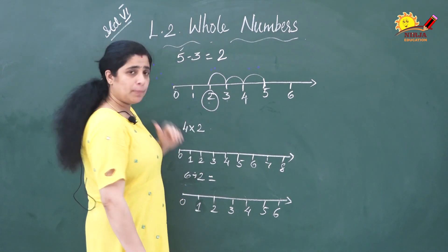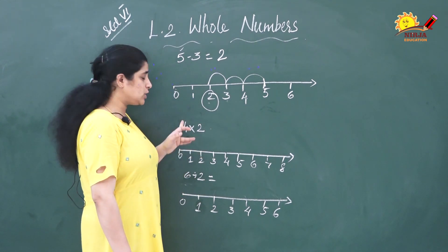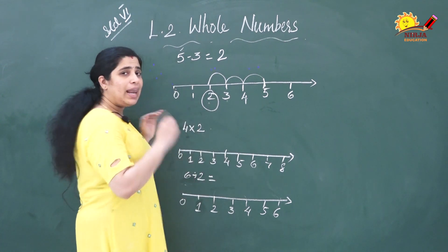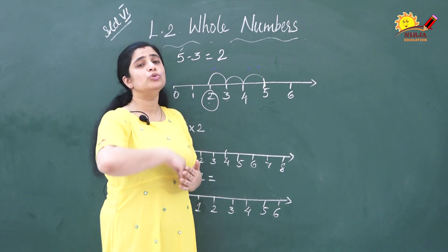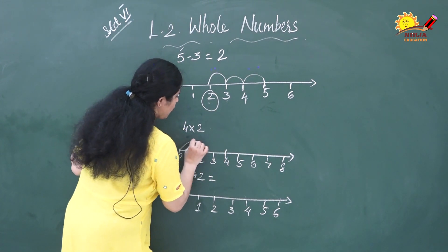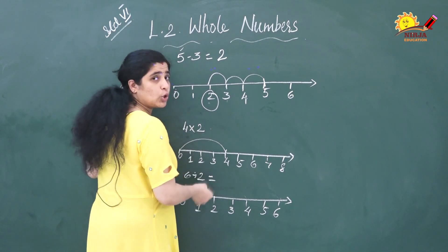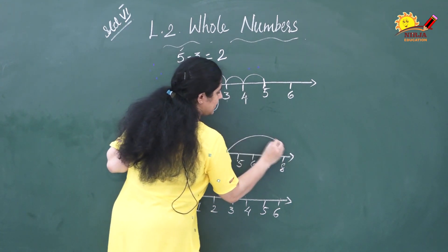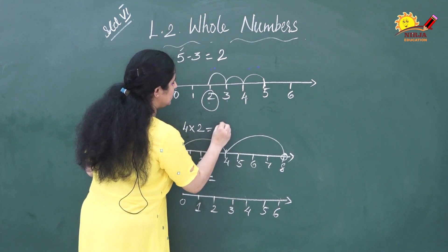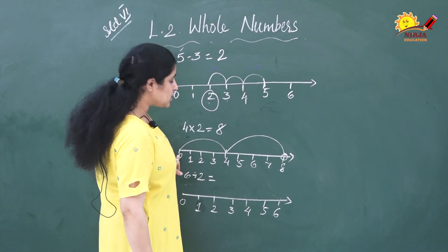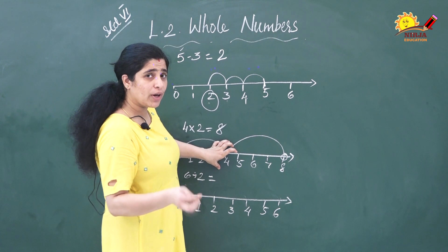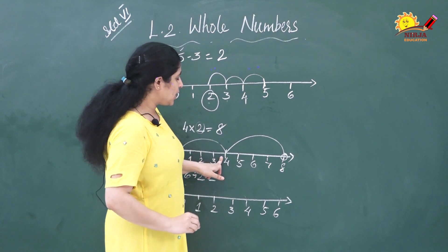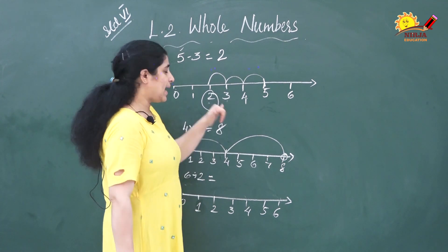Now let's see multiplication on the number line. Example: 4 × 2. You take 4 points and do 2 jumps. From 0, jump 4 units — first jump. Then from there, jump another 4 units: 1, 2, 3, 4. You reach 8. So 4 × 2 = 8. You jump 4 points, 2 times, because you are multiplying by 2.